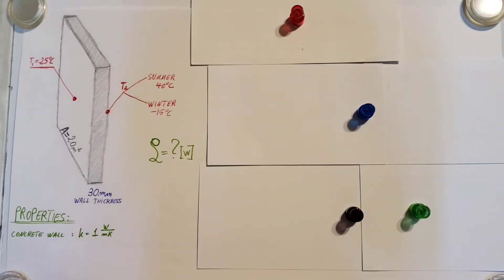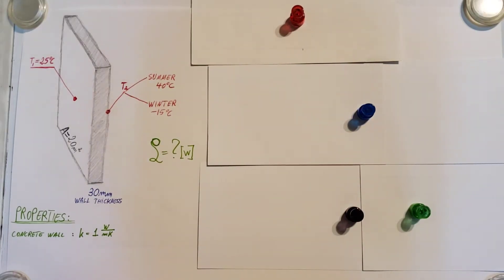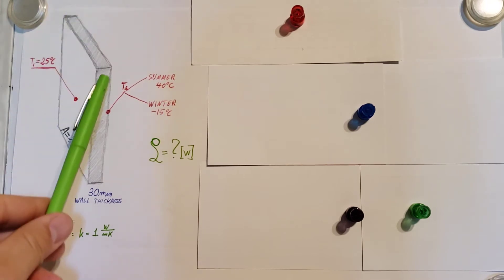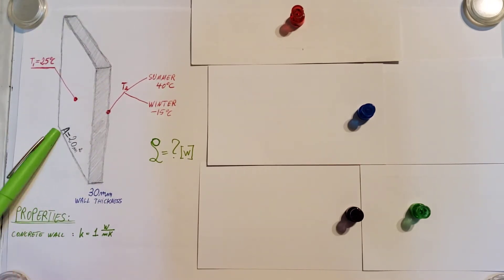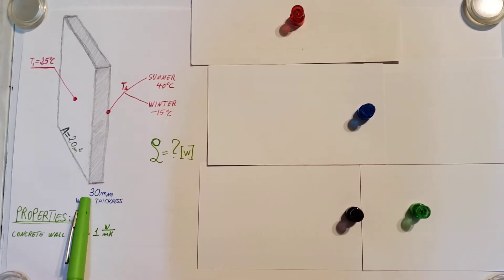All right, here we are dealing with a fairly simple heat transfer problem. We have a concrete wall that we know has a surface area of 20 meters squared.